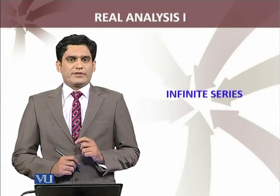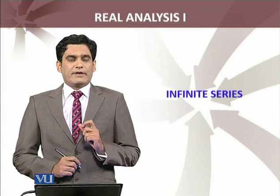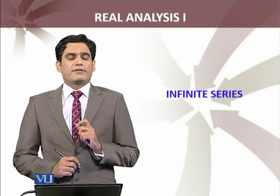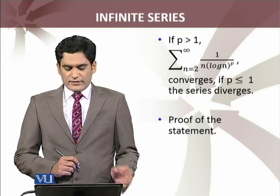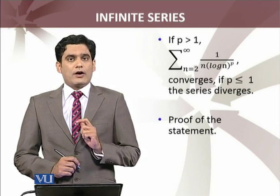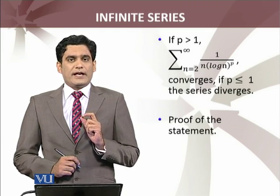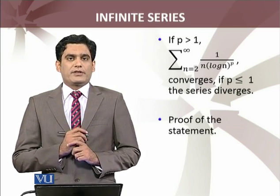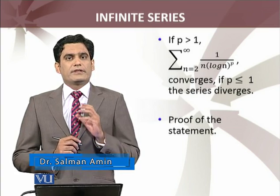We will continue with the infinite series. We are going to consider a very tough infinite series and discuss the convergence and divergence of that particular series. The series is summation n equals 2 to infinity of 1 over n times log of n raised to power p. I am going to show that if p is greater than 1, this series is convergent, and if p is less than or equal to 1, then the series will diverge.